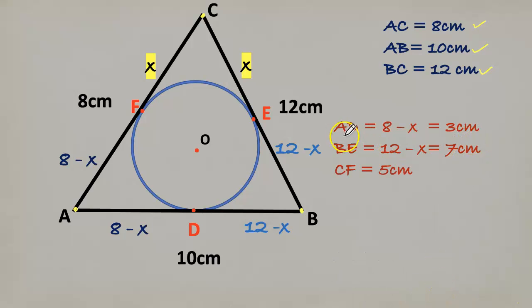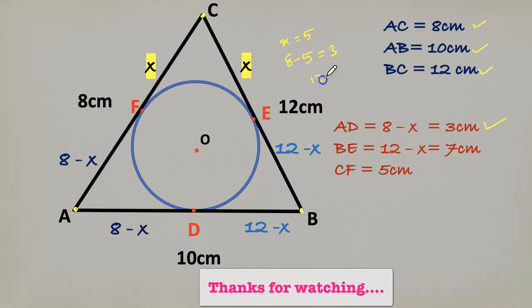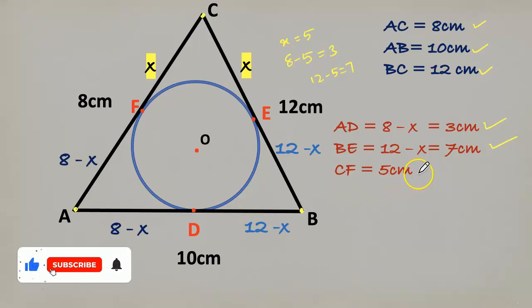So AD equals 8 minus X. We know that X is 5, so 8 minus 5 is 3, 3 cm. BE is 12 minus X, it means 12 minus 5 is 7, 7 cm. Therefore CF is X, that is 5 cm.